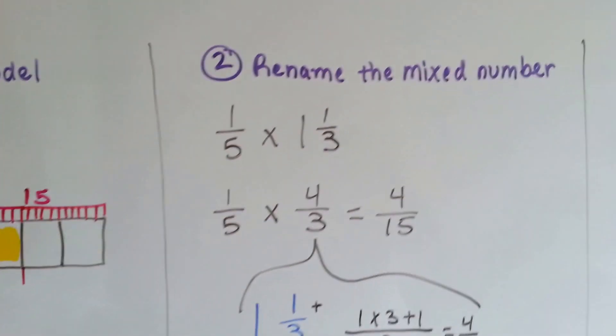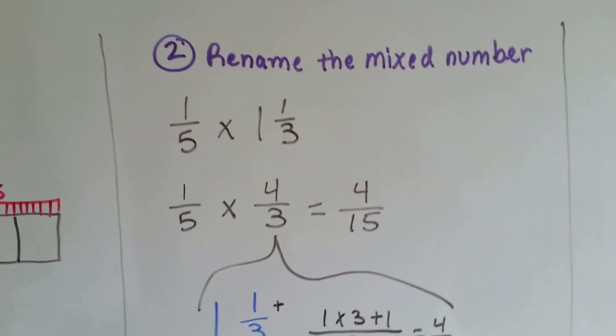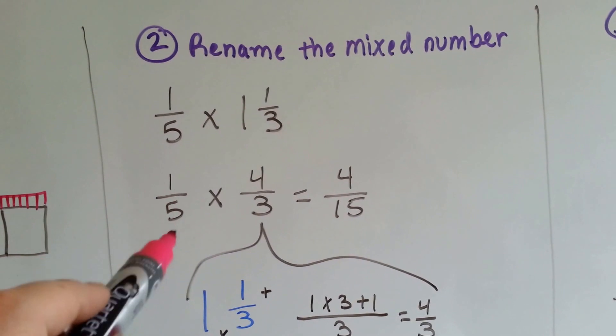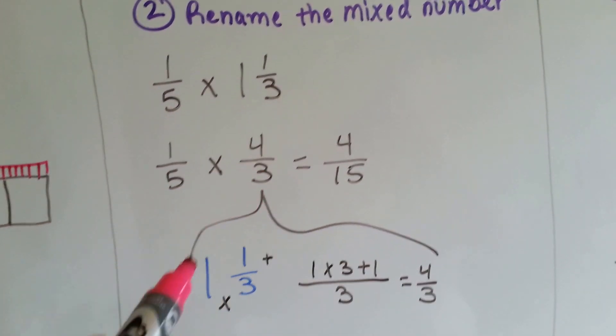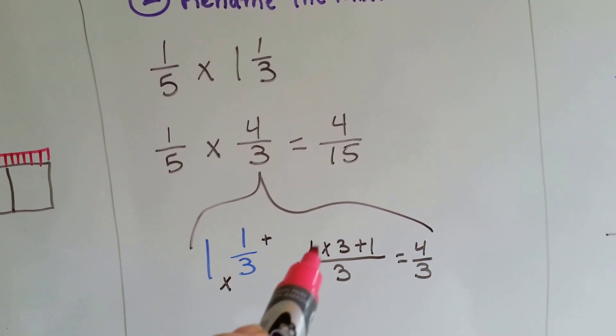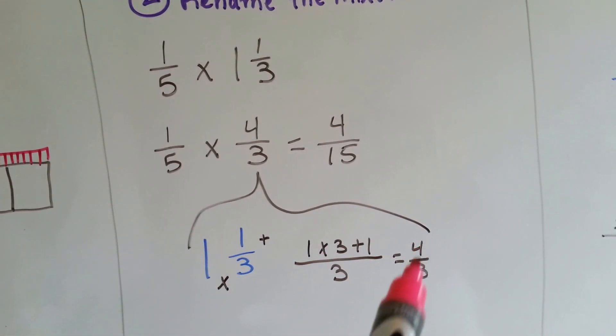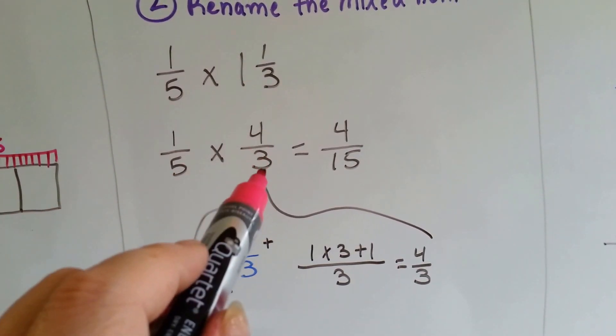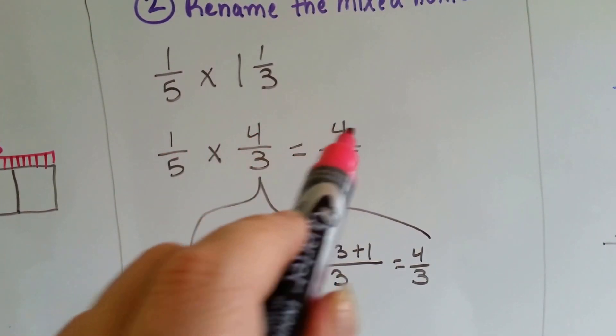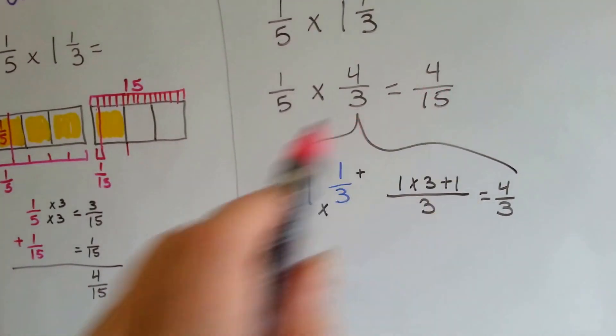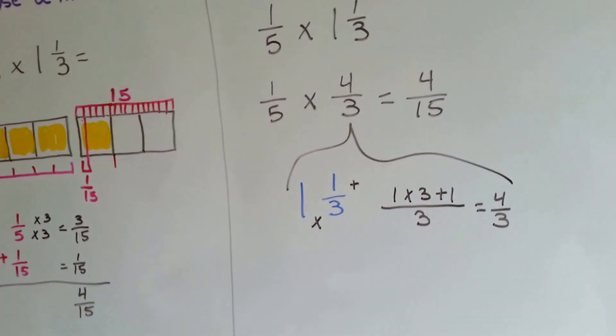We could also rename the mixed number. 1 fifth times 1 and 1 third becomes 1 fifth times 4 thirds. 1 and 1 third becomes 1 times 3 plus 1. 1 times 3 plus 1 is 4 thirds. So we do 1 fifth times 4 thirds. 4 times 1 is 4, 5 times 3 is 15, and we get 4 fifteenths just like we did with the model.